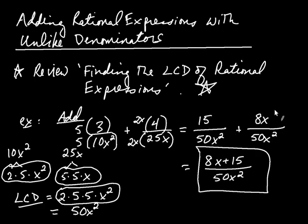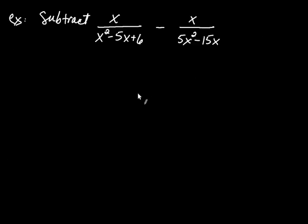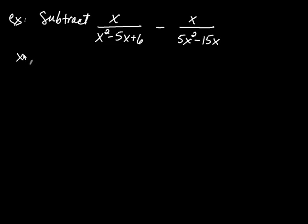Let's try another one that's a little more challenging now that we know how things go. We're going to subtract — taking this rational expression, which is basically a big fraction, take away another fraction. The key point: whenever you're adding or subtracting, you have to make sure the denominators are the same. So we're going to look for an LCD, a common denominator.